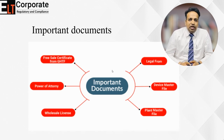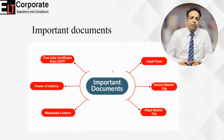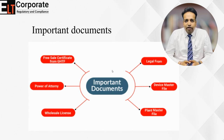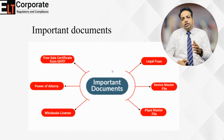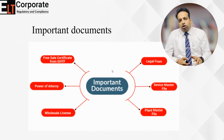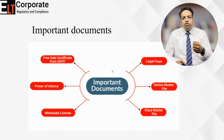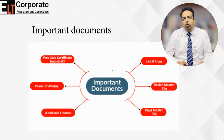A wholesale license — essentially a selling and distribution license — is also required, which you will obtain from your local state under Form MD-42. Additionally, a Plant Master File and Device Master File need to be provided by your supplier. A legal form is generated once you submit all the documents; you need to print it, digitally sign it, upload it back, and then finally pay the government fee.